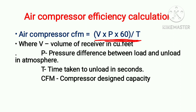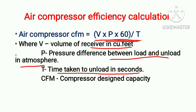The formula is: V × P × 60 divided by T. Here, V is the volume of the receiver in cubic feet. P is the pressure difference between load and unload pressure in atmospheres. T is the time taken in seconds between load and unload. CFM is the design capacity of the air compressor from the nameplate.